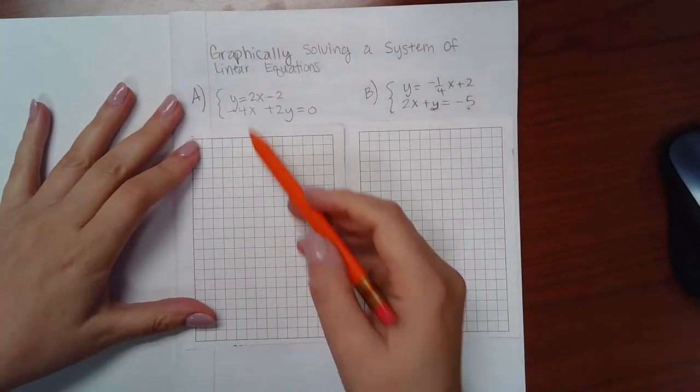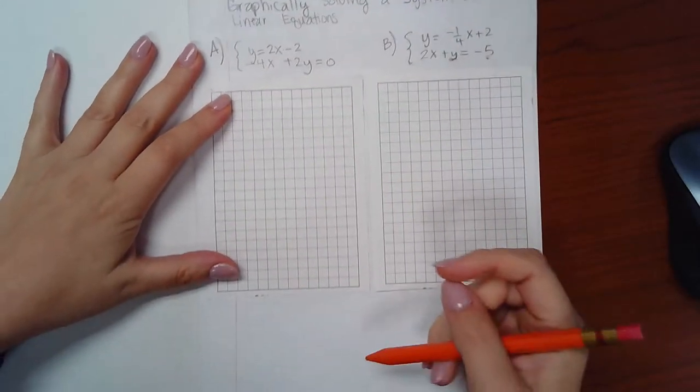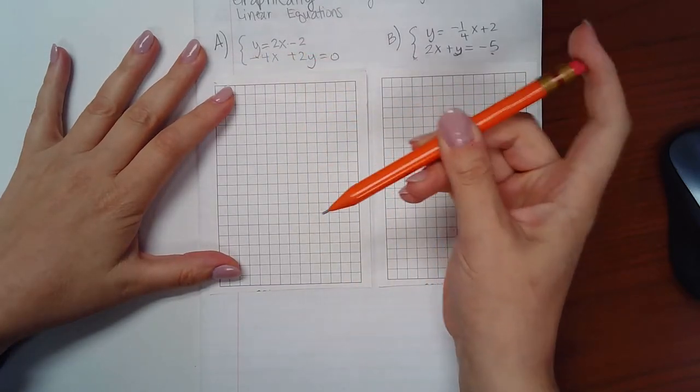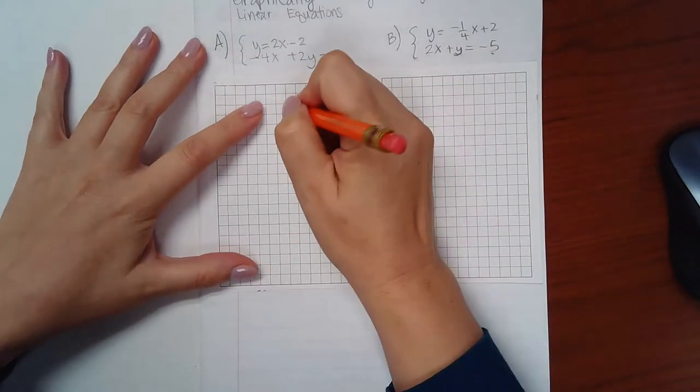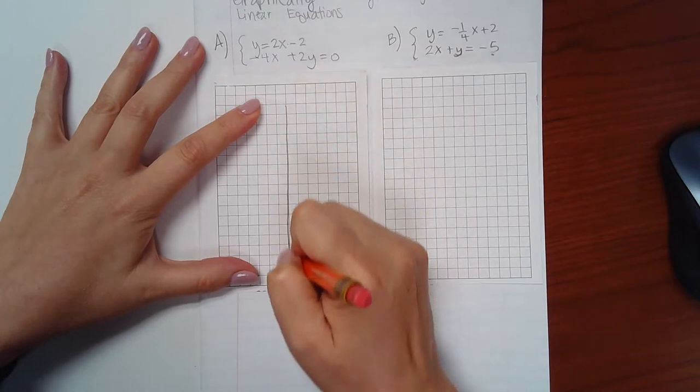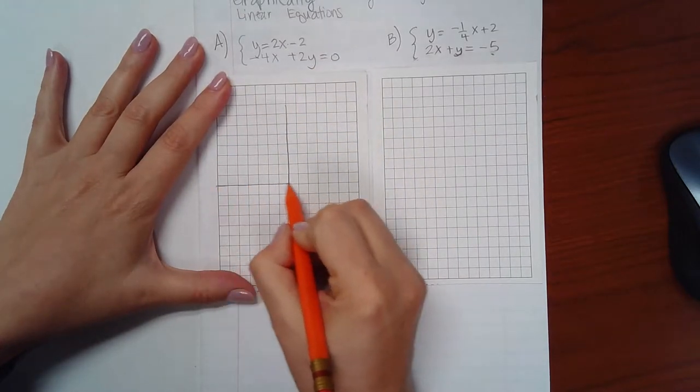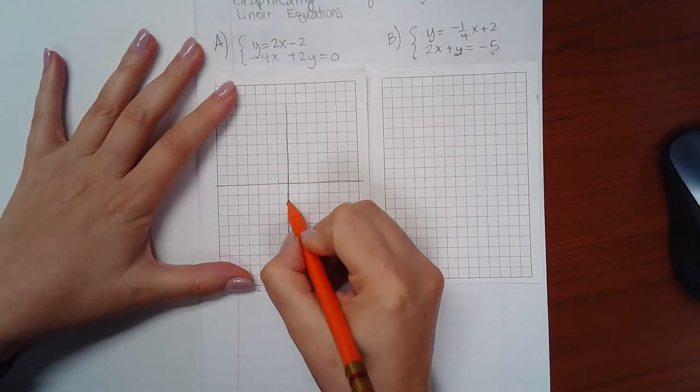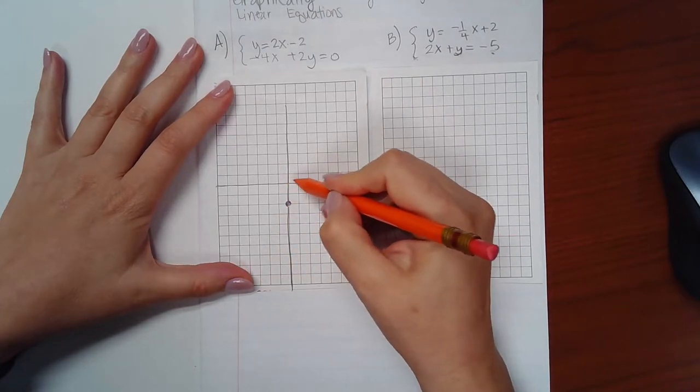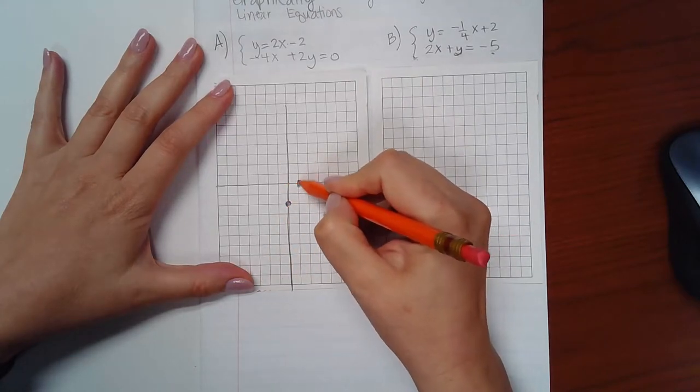So let's go ahead and start with the first one. If I simplify, the first one is actually already in slope intercept form, so I can graph that. So if I were to attempt to graph that one, I would start off with negative 2 as my y-intercept and then go up 2 and over 1 for my slope.